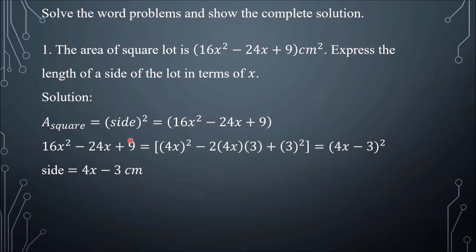This is factored as 4x squared — that's the first term. In order to get 24x, we have 2 times 4x times 3. We need to multiply by 3, and this 3 will be used in our last term. So 3 squared is 9. Simplifying, we have 4x minus 3, squared.